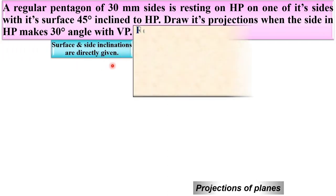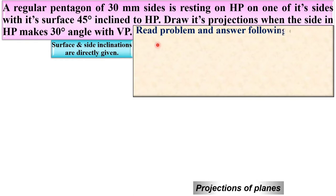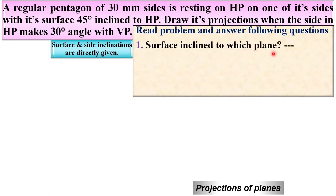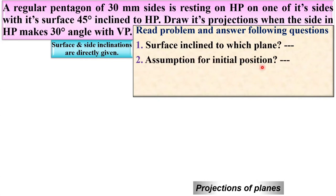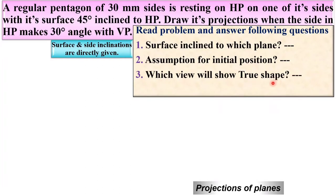First, here the surface and side inclination are given to you. Try to give the answer of the following questions from the description. First, surface inclined to which plane? Second, assumptions for initial position — that means the plane is either parallel to HP or parallel to VP. Third question, which view will show true shape — that means either top view or front view. And last, which side will be vertical — that means the pentagon having five sides.